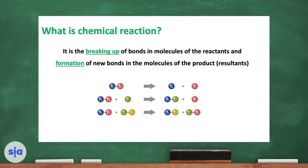Look at this picture. On the left, there are elements that are either bonded together forming compounds or alone — these are called the reactants. Before the arrow, the elements or compounds are called reactants. After the arrow, the elements or compounds are called the product or resultant.